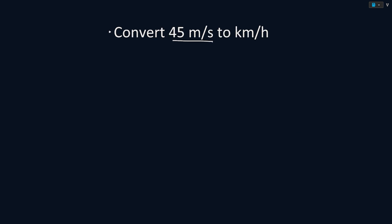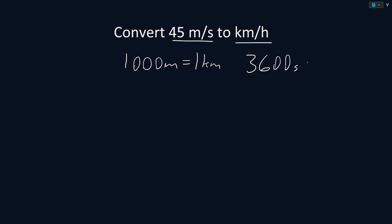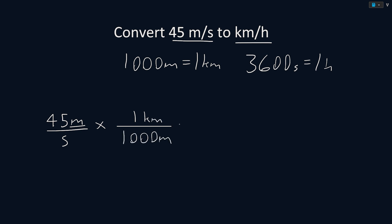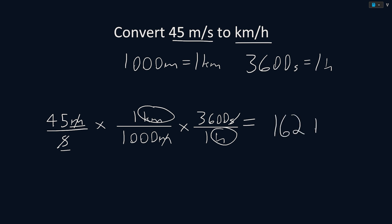Convert 45 meters per second to kilometers per hour. We know that there are 1,000 meters in 1 kilometer, and that there are 3,600 seconds per hour. So to convert our units, we start with 45 meters per second, then multiply by a fraction that cancels out our units. First we cancel the meters by putting kilometers on top and meters on the bottom. Then we multiply by another fraction relating seconds to hours, putting seconds on top and hours on the bottom. Solving this, the meters cancel and leave us with kilometers, and the seconds cancel and leave us with hours. This tells us that 45 meters per second is equal to 162 kilometers per hour.